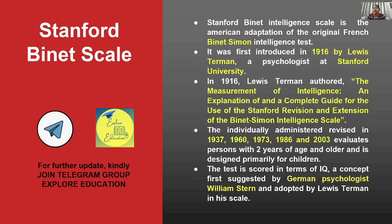The Stanford-Binet Scale was first introduced in 1916 by Lewis Terman, a psychologist at Stanford University. We need to remember the year: 1916. In 1916, Lewis Terman also wrote a book titled 'The Measurement of Intelligence: An Explanation of and a Complete Guide for the Use of the Stanford Revision and Extension of the Binet-Simon Intelligence Scale.'